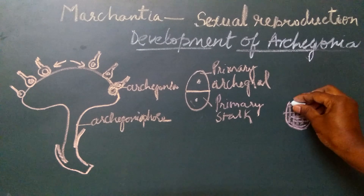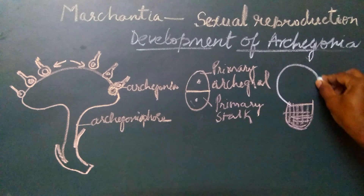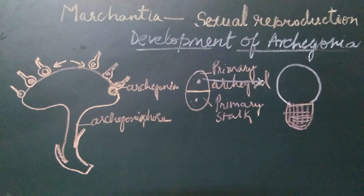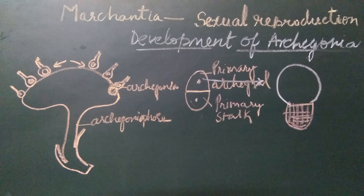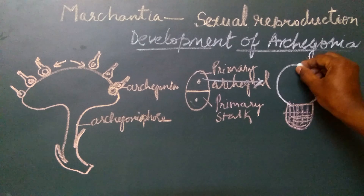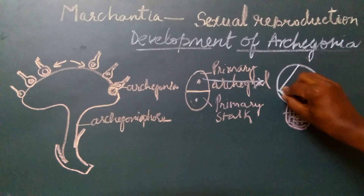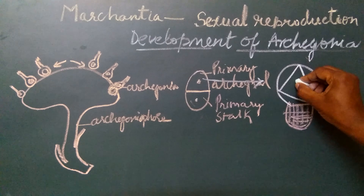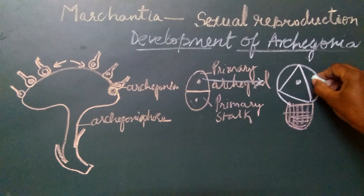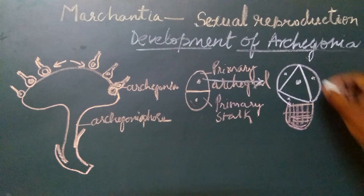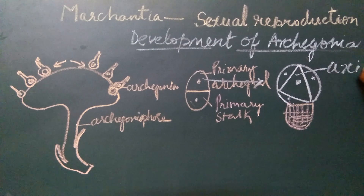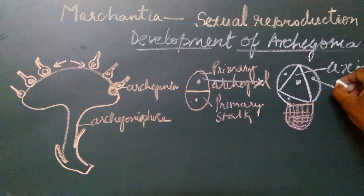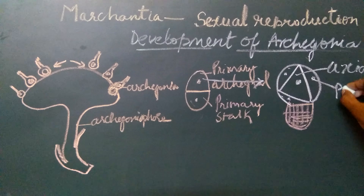Whereas the primary archegonial cell divides by three successive oblique vertical intersecting walls — three walls which are oblique and intersecting with one another. This results in the formation of a central cell and three peripheral cells. The central cell is called the axial cell, or central axial cell, and the three surrounding ones are the peripheral cells.